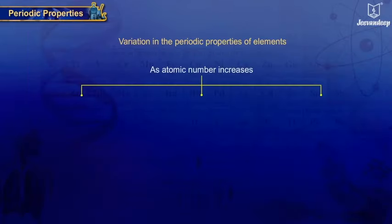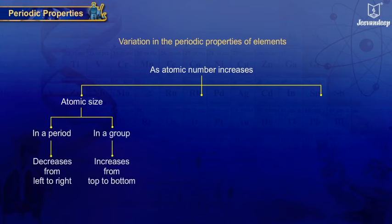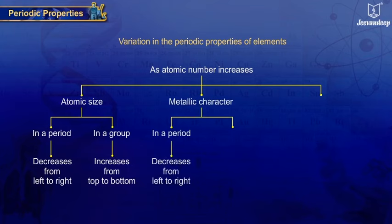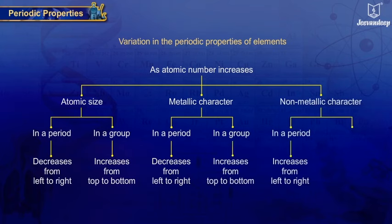Let us have a look at the tree diagram summarizing the variation in periodic properties of elements. As atomic number increases, atomic size in a period decreases from left to right, and increases from top to bottom in a group. The metallic character decreases from left to right in a period and increases from top to bottom in a group. The non-metallic character increases from left to right in a period and decreases from top to bottom in a group.